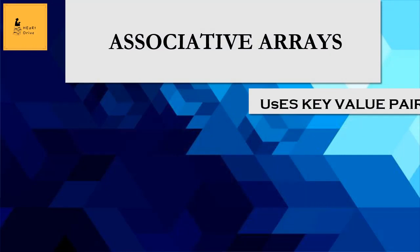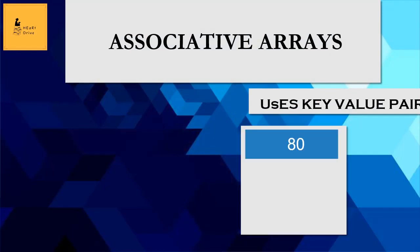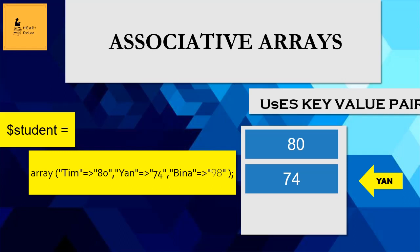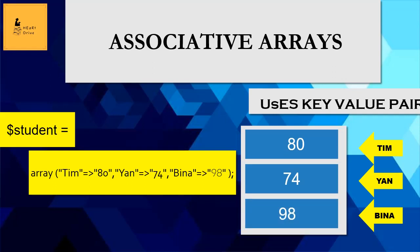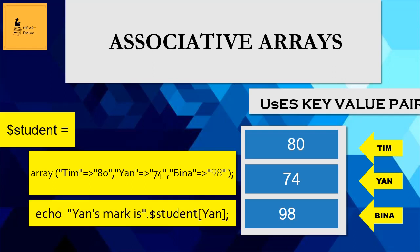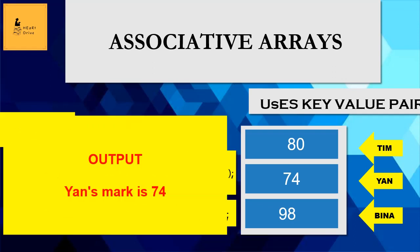Let's write the code for the 3-member array: $student = array(), with elements Tung pointing to mark 80, Yarn pointing to mark 74, and Vina pointing to mark 98. Now I can get Yarn's mark with the command echo $student['Yarn']. Since the key value is 'Yarn', I put Yarn in the bracket, and I will get Yarn's marks displayed in the output.